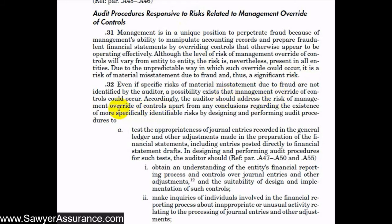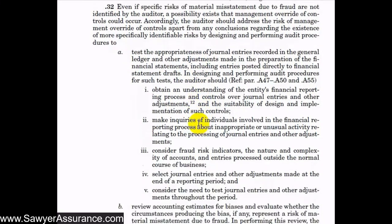We need to address the risk of management override of controls specifically in our audit, and several ways to do that are listed in AUC Section 240.32. One way is by testing journal entries, which might include entries recorded in the general ledger, other adjustments made in the preparation of financial statements, such as consolidating entries or entries made directly to the financial statement draft — where rather than making an actual journal entry in the trial balance, they just add or subtract numbers within the financial statements.